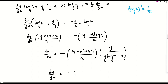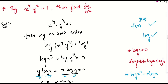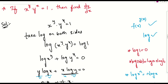So the final answer is: dy/dx equals minus y times (y plus x log y) divided by x times (y log x plus x). That is our final answer. If you have any doubts, just let me know. Thank you.